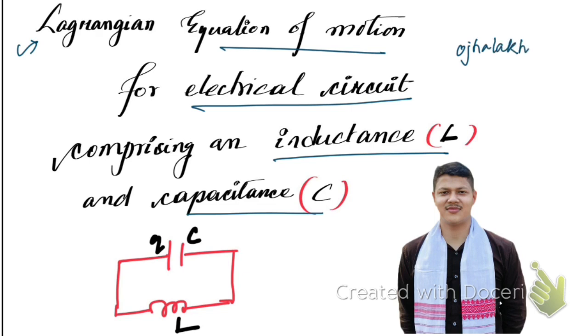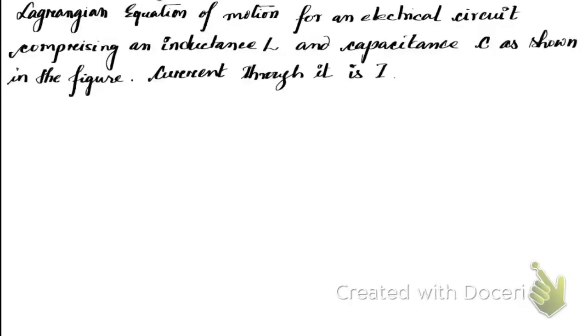Now let's start. Suppose we have an LC electrical circuit as shown in the figure. This is a capacitor of capacitance C and an inductor of inductance L. The current through this circuit is I, and the charge stored in the capacitor is Q.